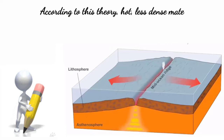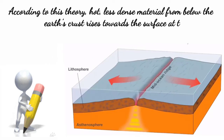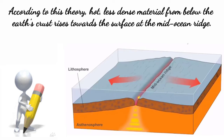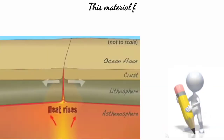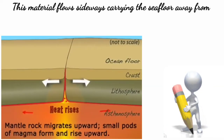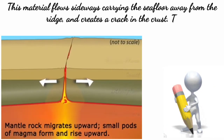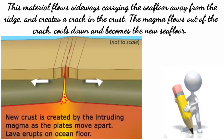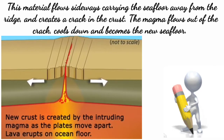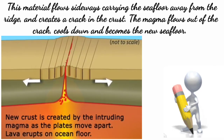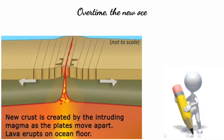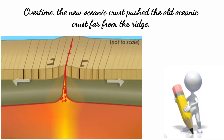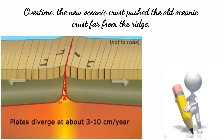According to this theory, hot, less dense material from below the Earth's crust rises towards the surface at the mid-ocean ridge. This material flows sideways, carrying the seafloor away from the ridge and creating a crack in the crust. The magma flows out of the crack, cools down, and becomes the new seafloor. Over time, the new oceanic crust pushes the old oceanic crust far from the ridge.